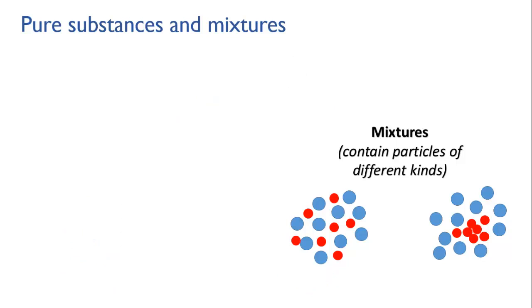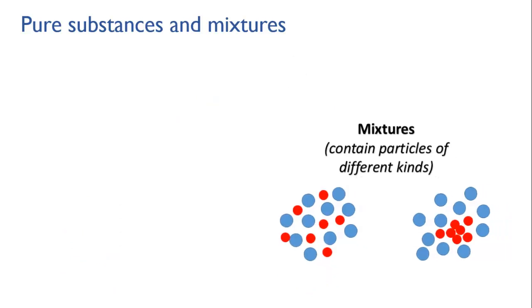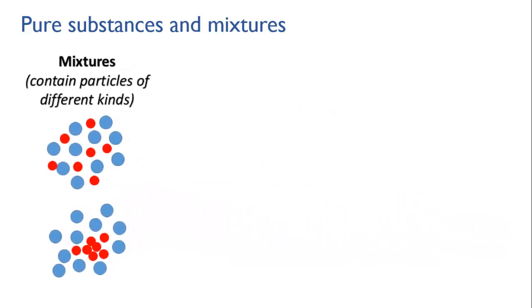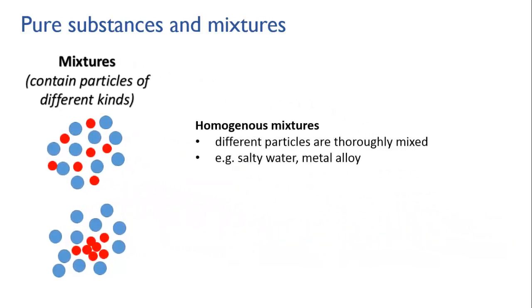Depending on whether the different particles are mixed evenly or not, we can distinguish two types of mixtures. In homogeneous mixtures the different particles are thoroughly mixed, so that if you looked at one part of the mixture you'd see roughly the same types and numbers of particles as in any other part. Salty water is a homogeneous mixture, we would call it a solution, since the salt ions are evenly distributed through the water. Many metal alloys are like this as well, with atoms of one metal randomly distributed among atoms of another.